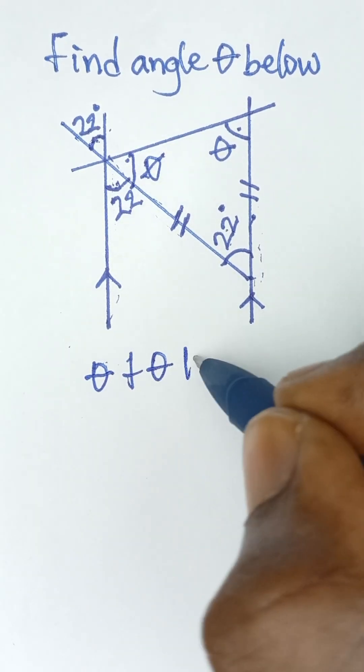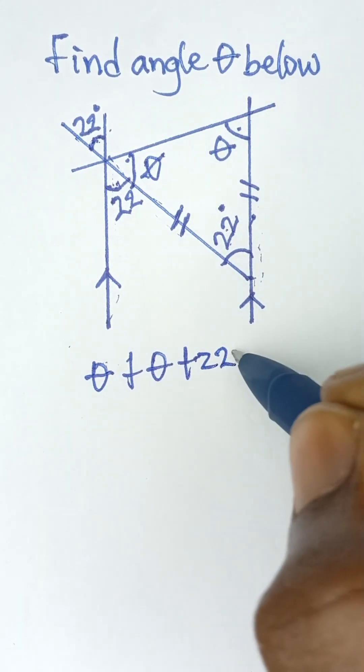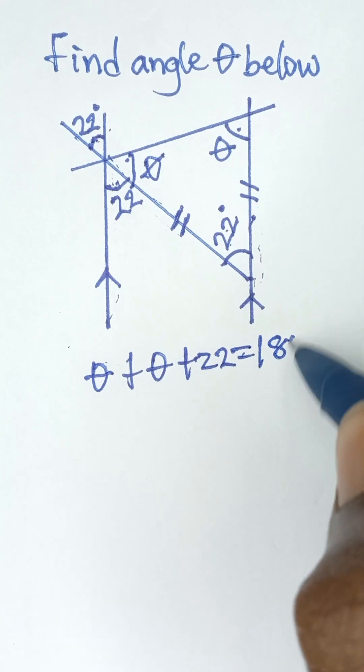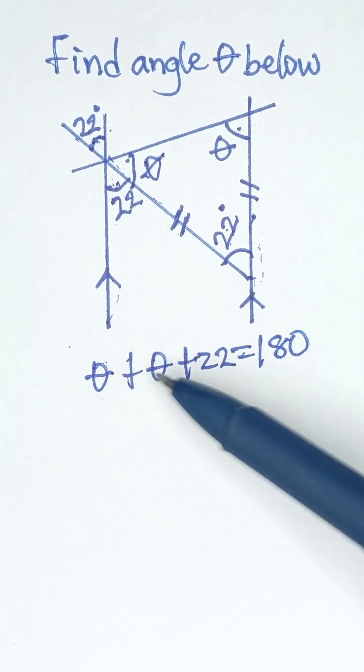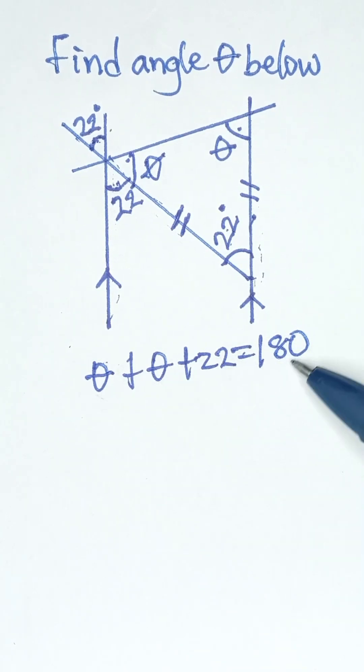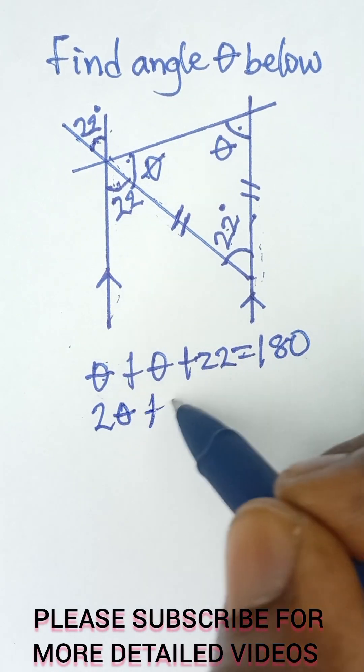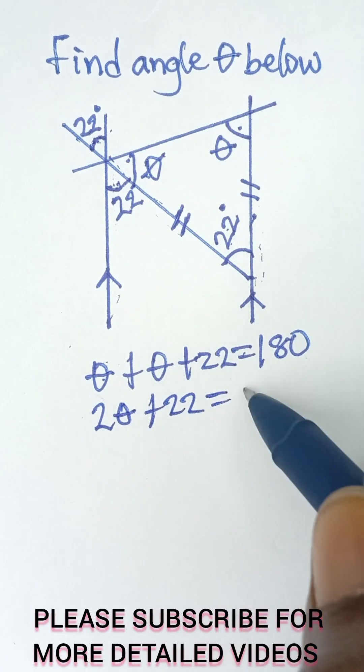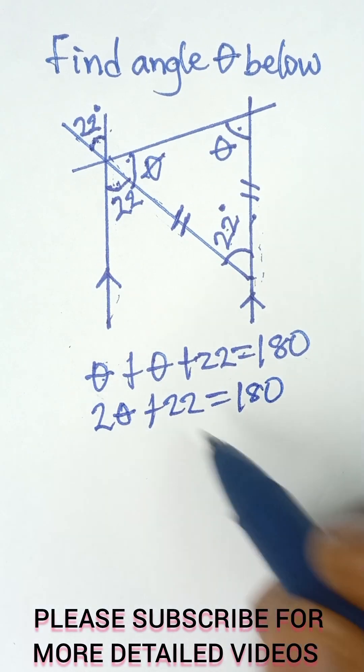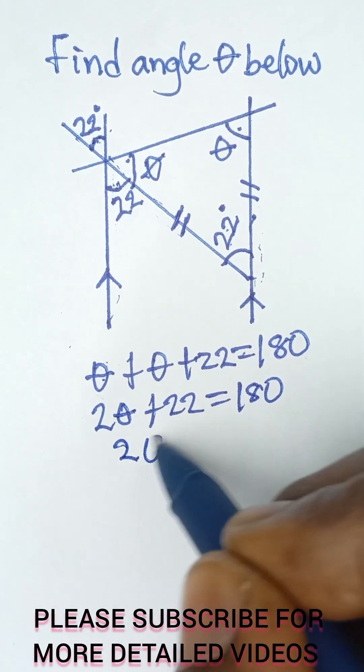Because sum of angles in a triangle add up to 180, so 2 theta - that's theta plus theta is 2 theta - plus 22 is equal to 180. So that 2 theta will be equal to 180 minus 22.